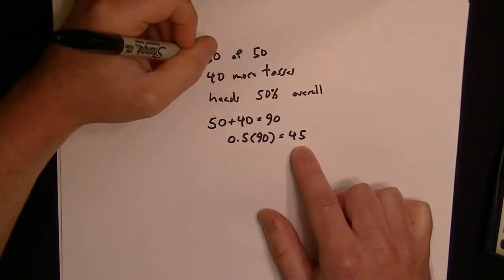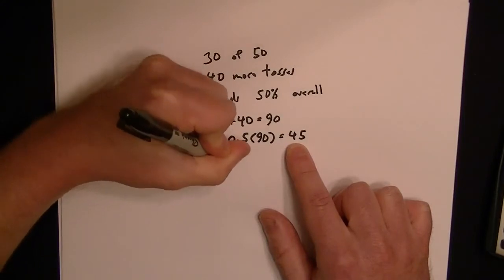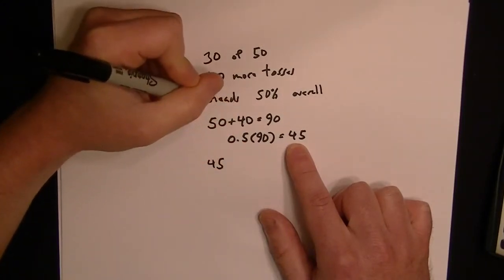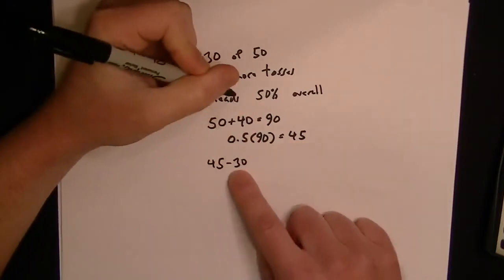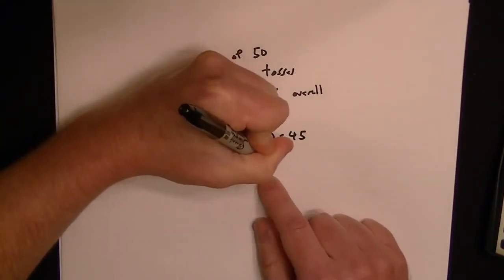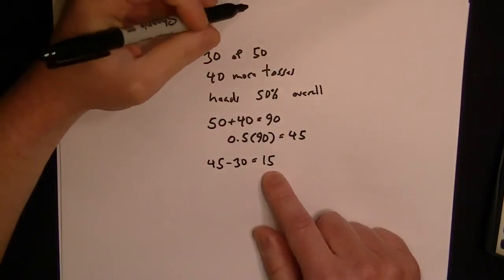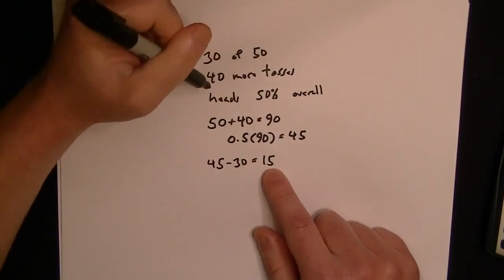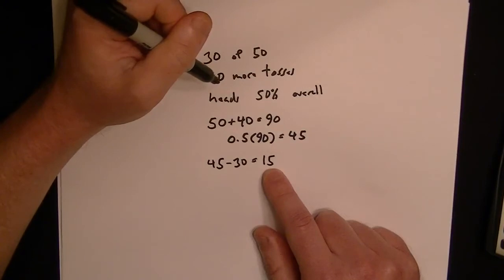They said initially that 30 of the tosses were heads. So if we need to have 45 tosses come up heads, but we already have 30 that have come up heads, then 45 minus 30 is 15. We have to have 15 more heads out of the 40 tosses in order to get our overall 50% head score.